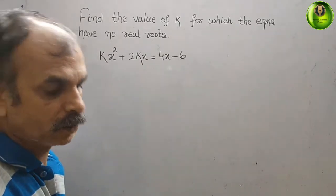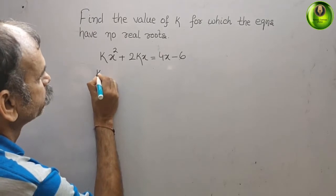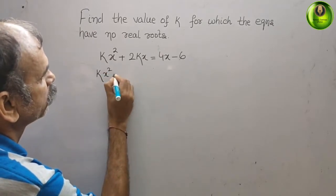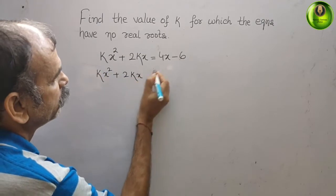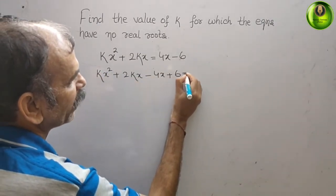Bring everything to your left side first. It will be kx² + 2kx - 4x + 6 = 0.